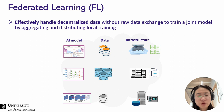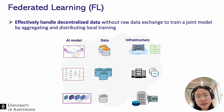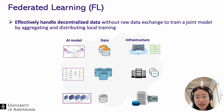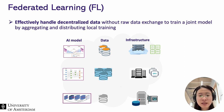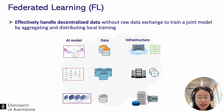Federated learning is a revolutionary method that allows for collaborative model training across multiple decentralized devices while maintaining data privacy. It can effectively handle decentralized data without raw data exchange to train a joint model by aggregating and distributing local training. It is a key solution for scenarios where data cannot be centralized due to data privacy or regulatory concerns. It involves various AI models, data, and heterogeneous infrastructures that store the data.